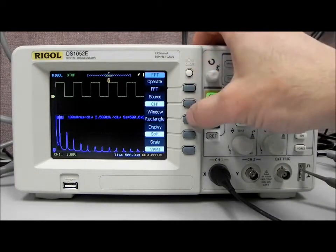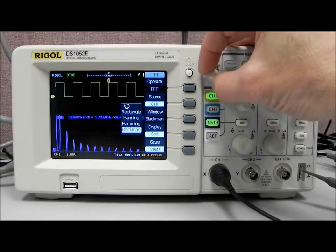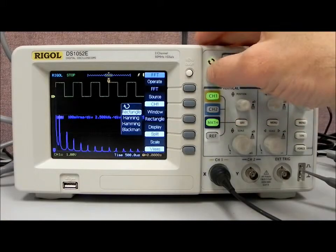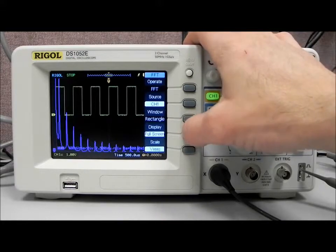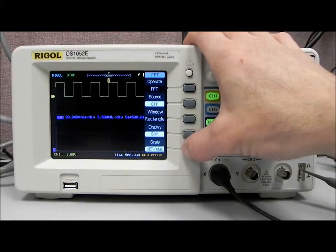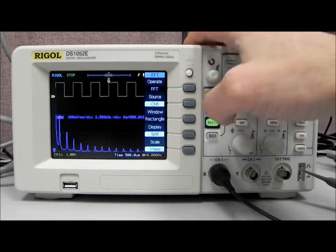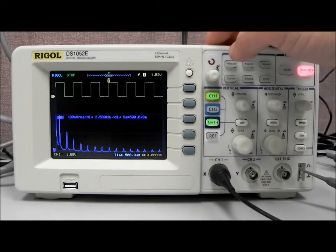Again, we can select channel 1 and channel 2. We have different window options available to us. We're going to stay with rectangle, and we can split the view, so we can enable a larger screen display. We can also select DBE VRMS, or we can go VRMS, and let's stick with that.